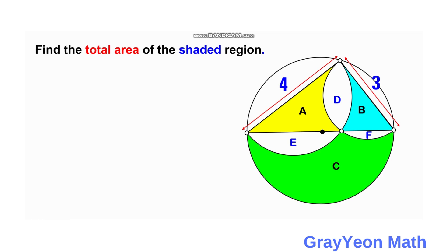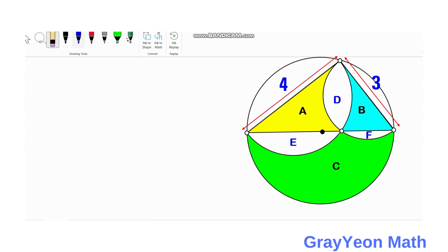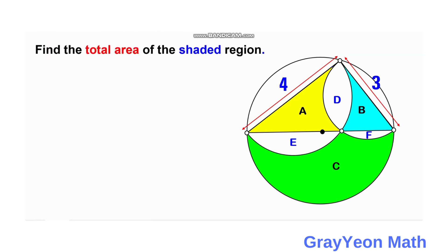The first thing we can notice from this figure is that we have a right triangle with legs of 4 and 3. The third segment is actually passing through the diameter of the largest circle, and if that is so, then this angle is actually 90 degrees because of Thales' theorem.